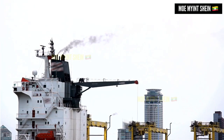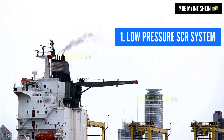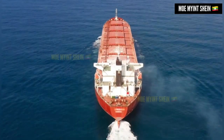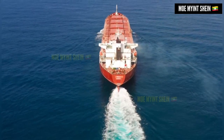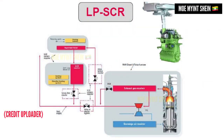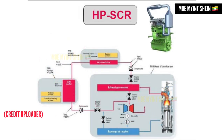There are two different types of SCR system: low pressure SCR system and high pressure SCR system. In a low pressure SCR system, the SCR reactor is placed after the turbocharger. However, the SCR reactor is placed before the turbocharger in a high pressure SCR system. High pressure SCR system is more compact than low pressure SCR system — it requires less space and shorter piping length.